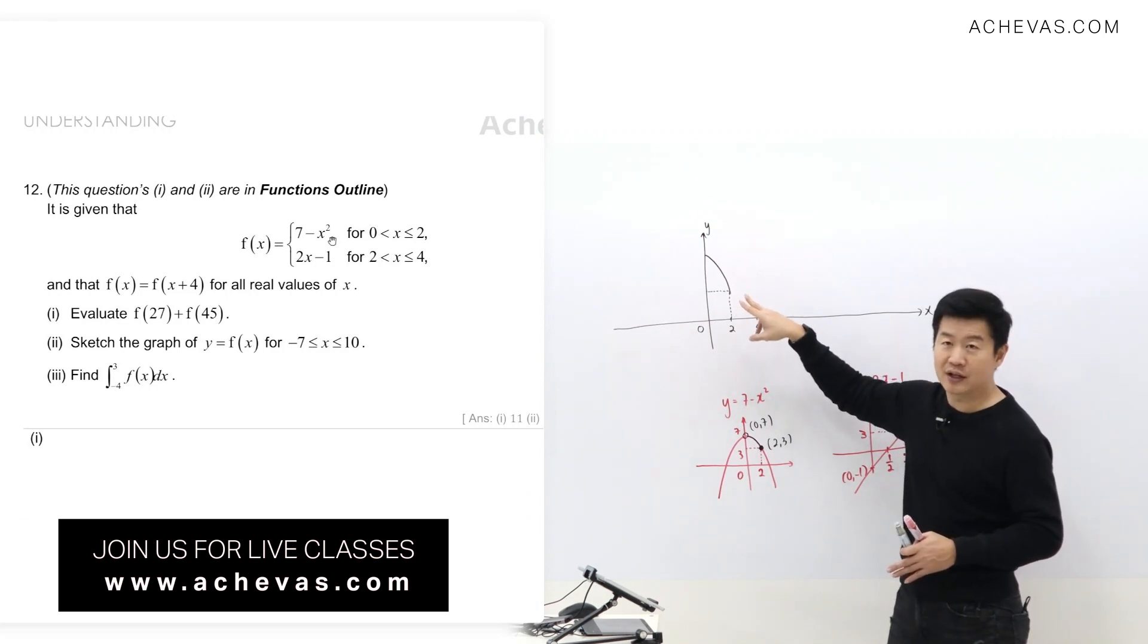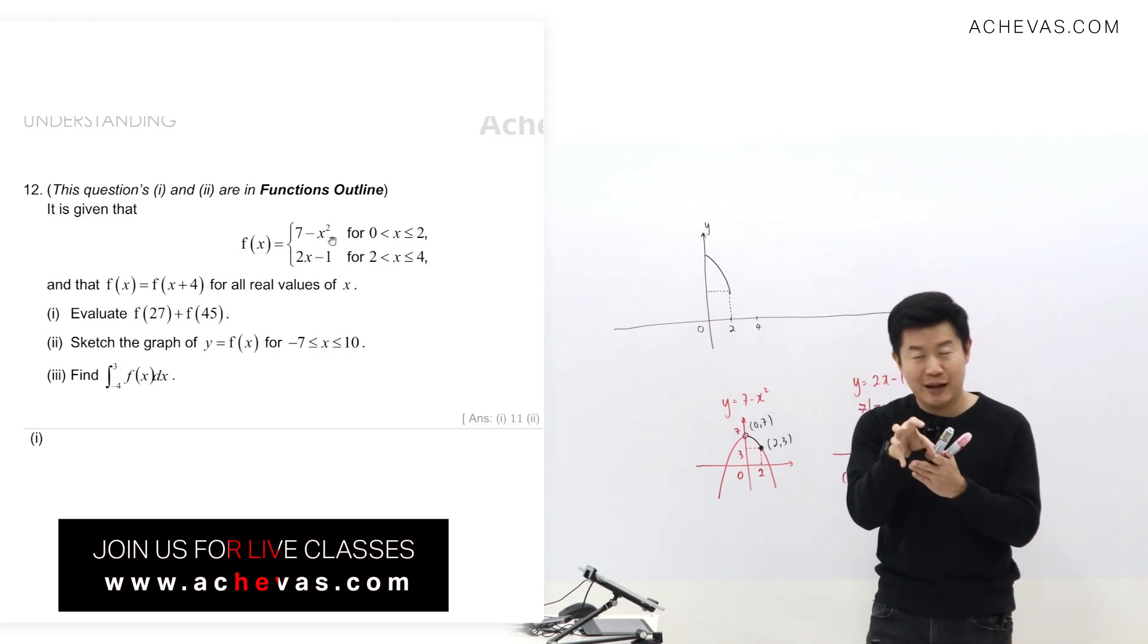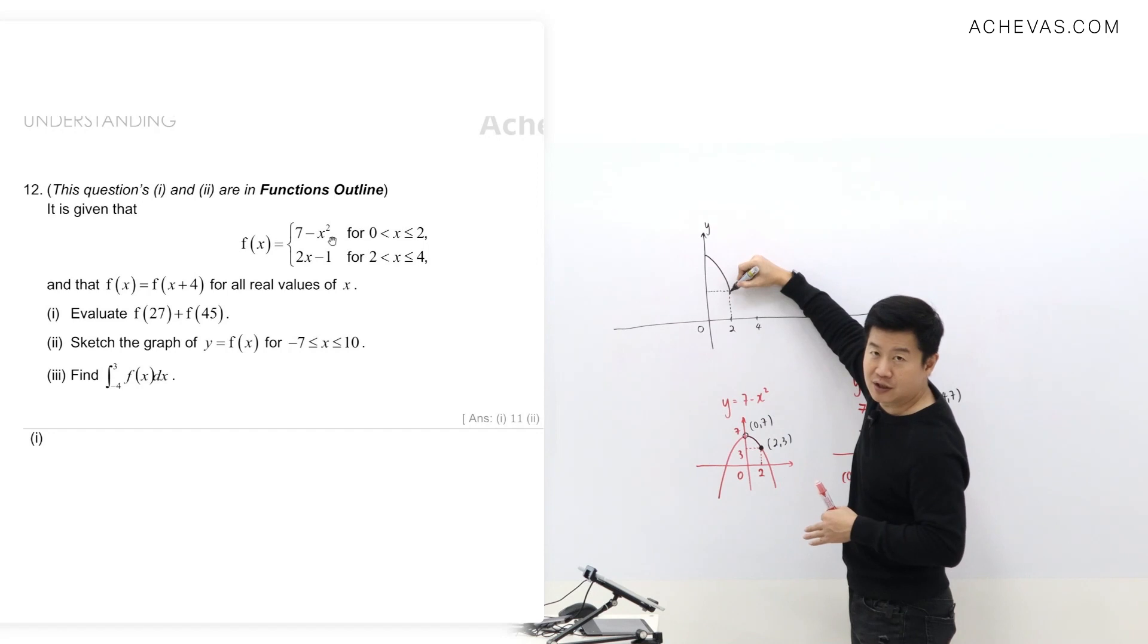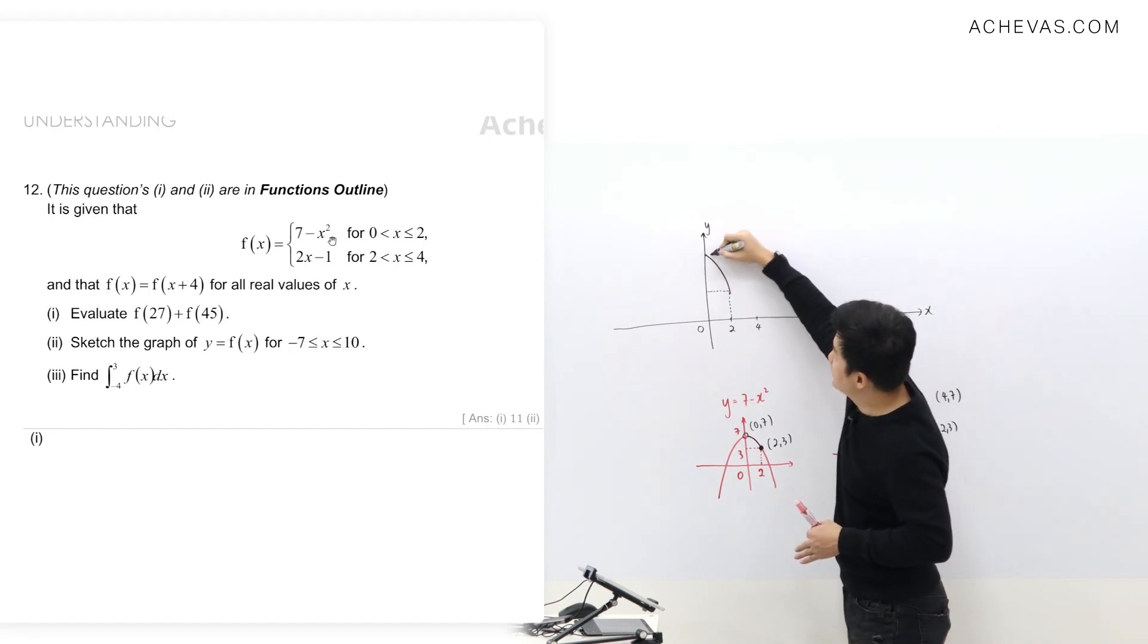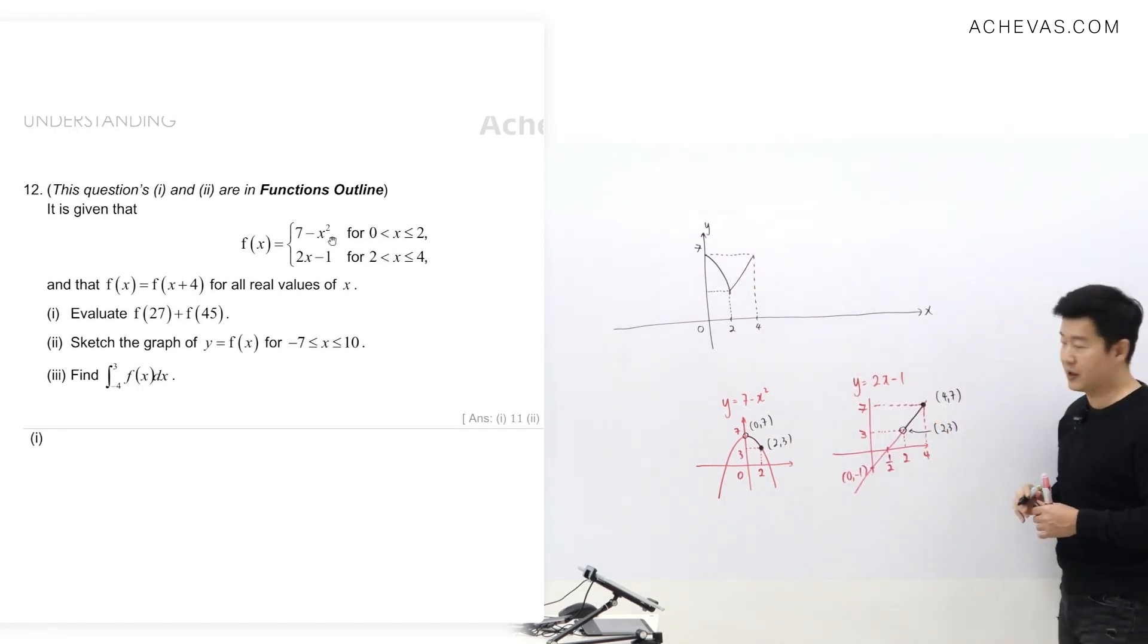Since it produces something, I will just not draw any dot. Then you continue to here, and this shares the same seven. At this point here, it will be a straight line until here at (4,7).